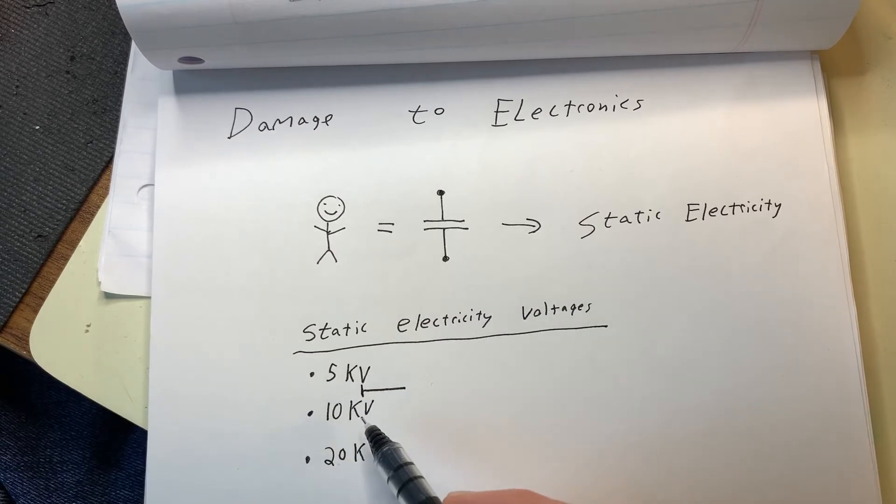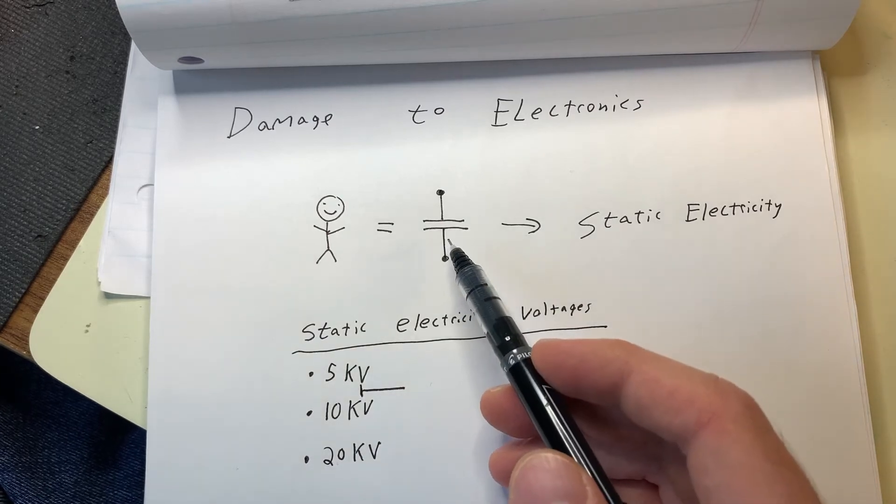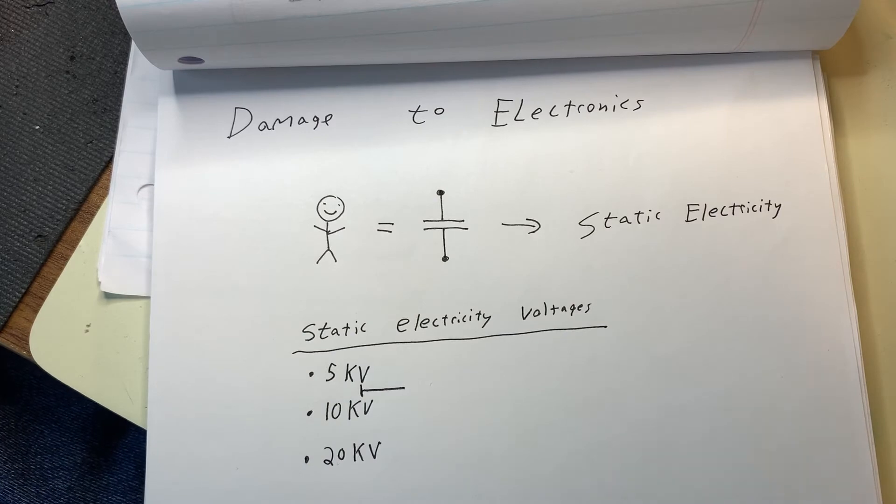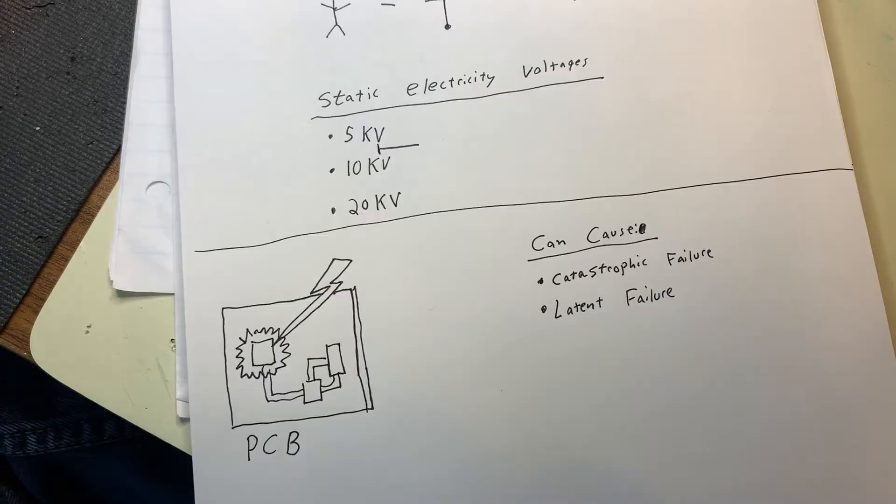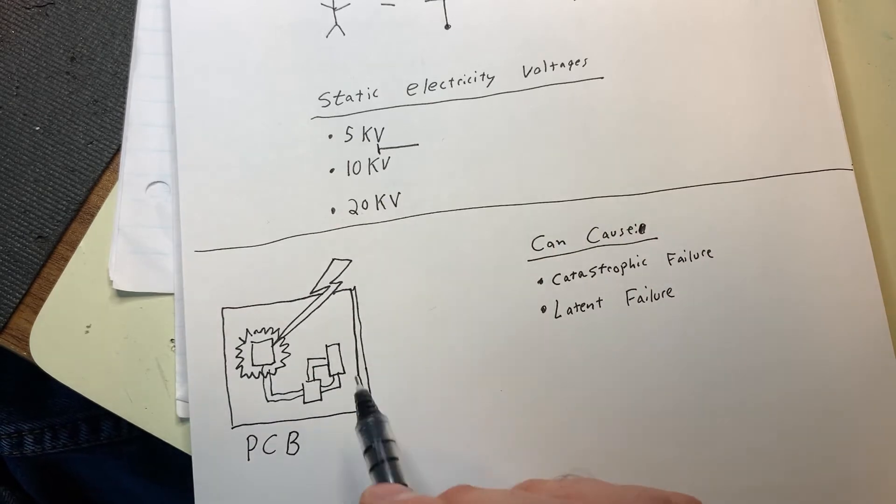10 kilovolts of static charge sounds like a lot, but fortunately the human body's internal capacitance is very, very low. So even though we can store a very high voltage, we don't have the capacity that's going to allow us to be dangerous. But unfortunately this static shock that would not be harmful to us can be absolutely killer to electronic devices.